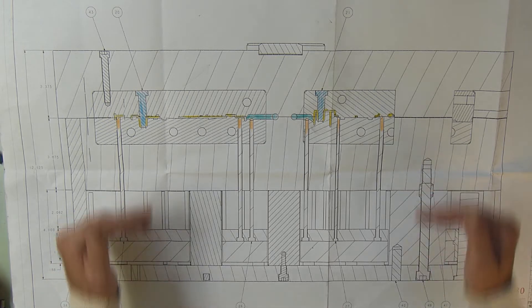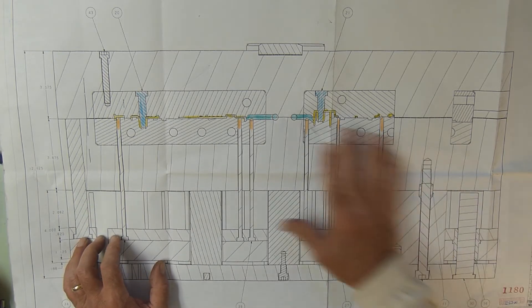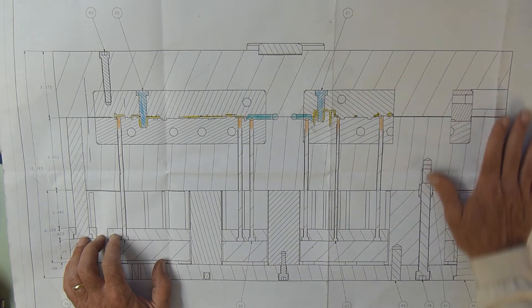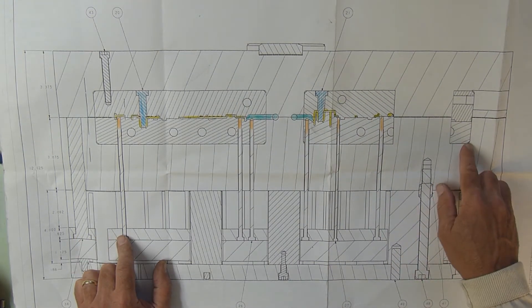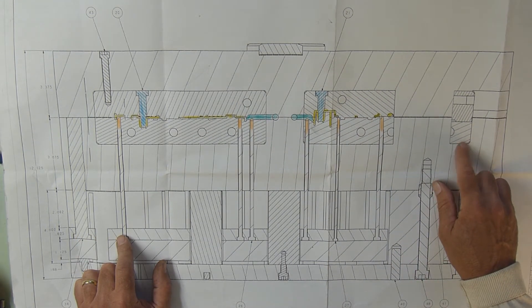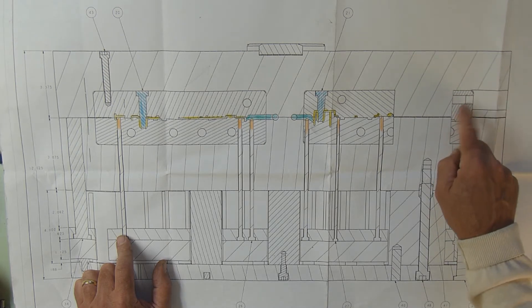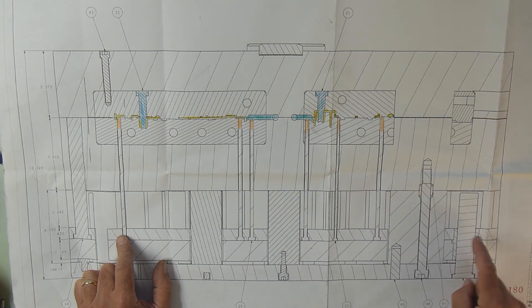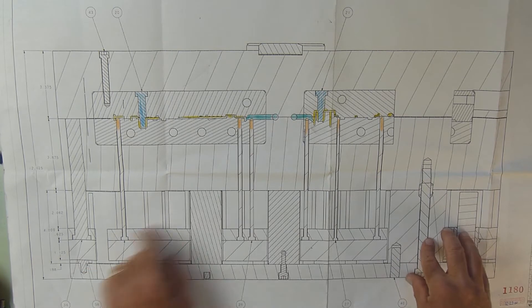So that's your first overview. I was going to say those are parting line locks, I don't think so because of the way the section's cut. There's so much to teach you, but there's your first view of a section view of an injection mold.